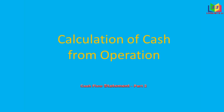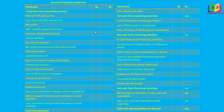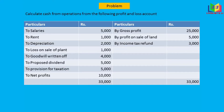Hello viewers. In this video we'll see the calculation of cash from operations. This is the format of a cash flow statement — we saw this in detail in our previous video, so those who didn't watch it should watch that first. We have three kinds of activities: operating activity, investing activity, and financing activity.